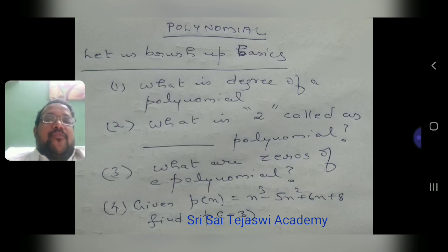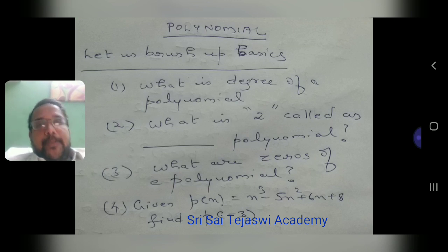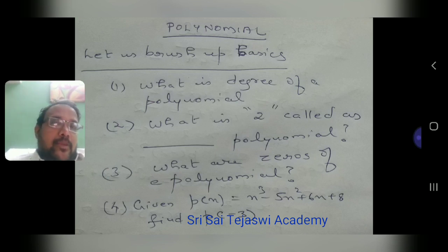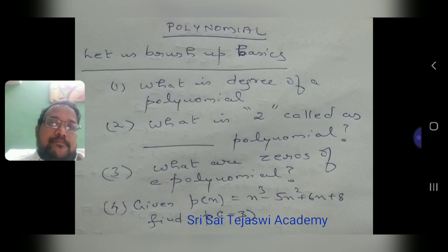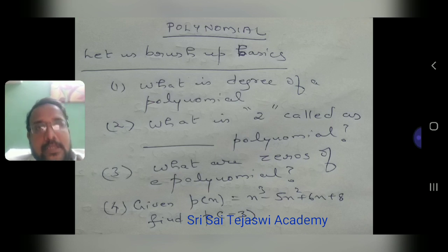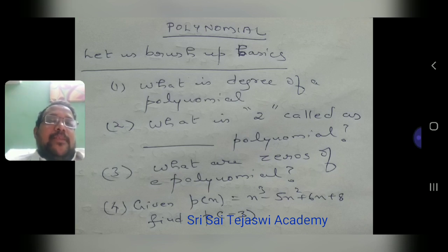Question number 4: given p of x equal to x cube minus y x square plus 6x plus 8, find p of minus 3. p of minus 3 means wherever x is there, you have to substitute minus 3, calculate, and find the answer. So this was the recap of what you studied in the previous video.